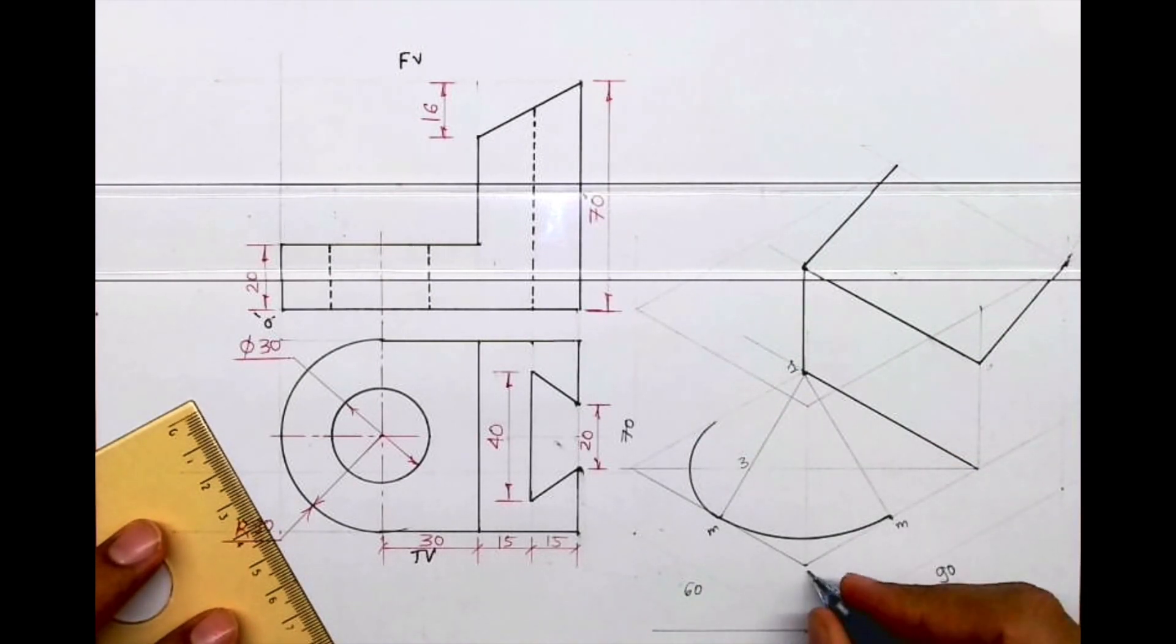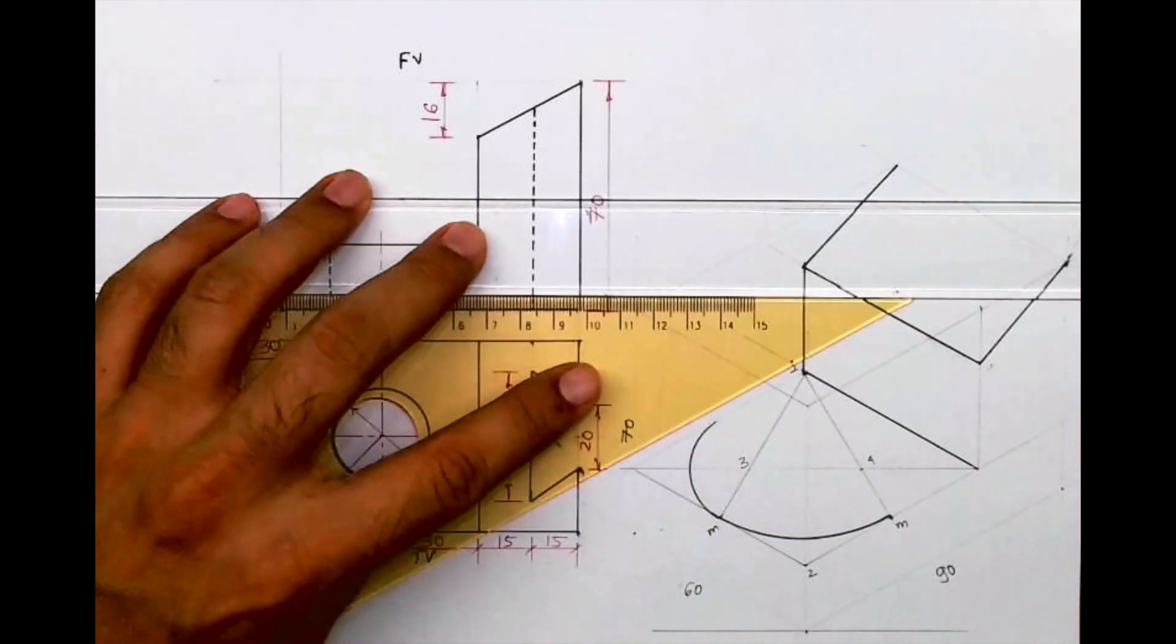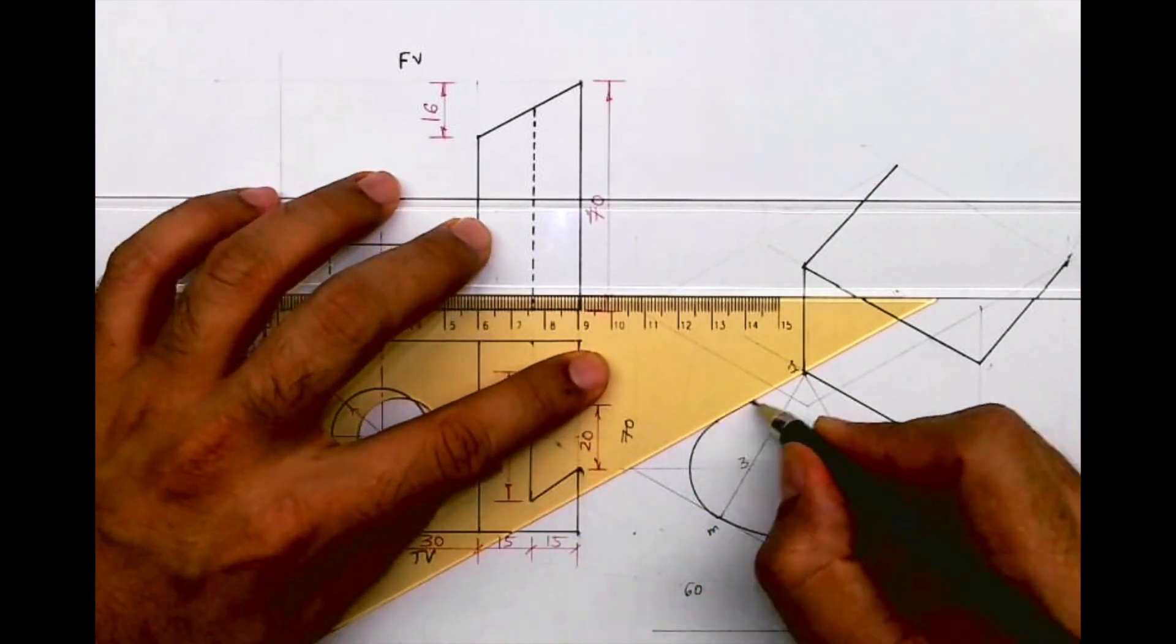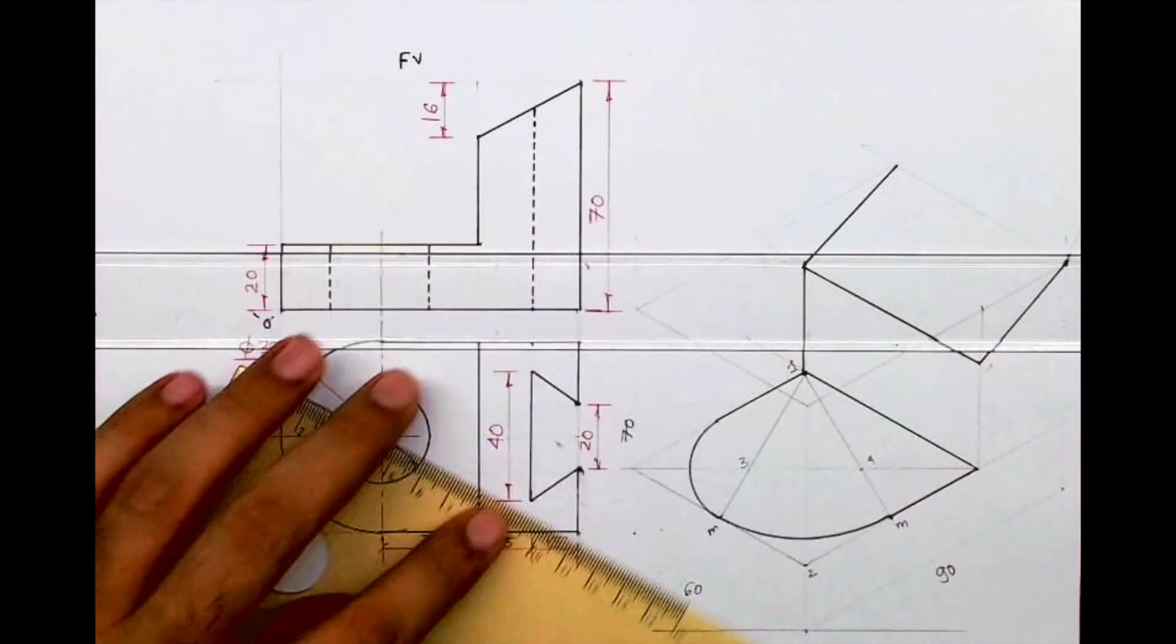Now I can draw the same arc down. How much we have to go down? 20. This is 2 and 4, we don't require that because we are drawing only half circle. If we are drawing full circle then we require point 2 and 4.